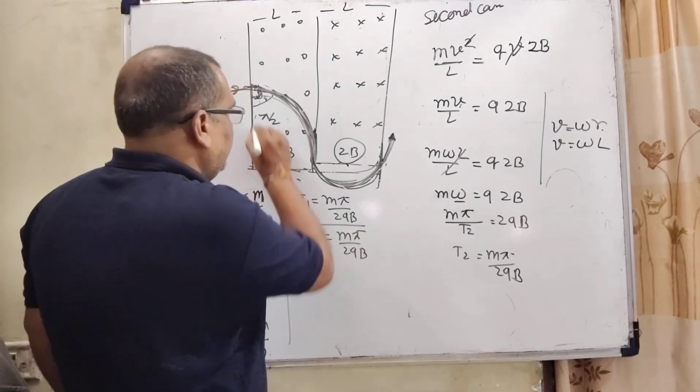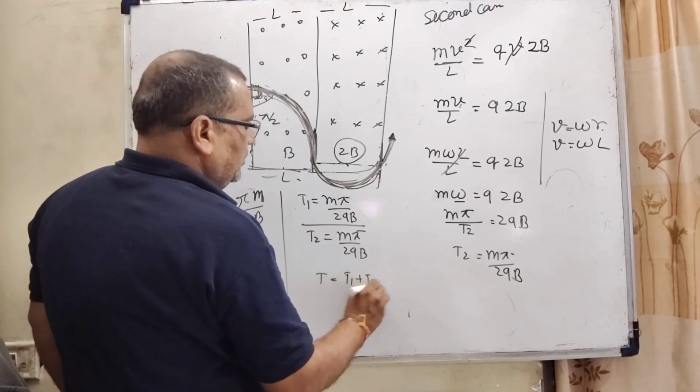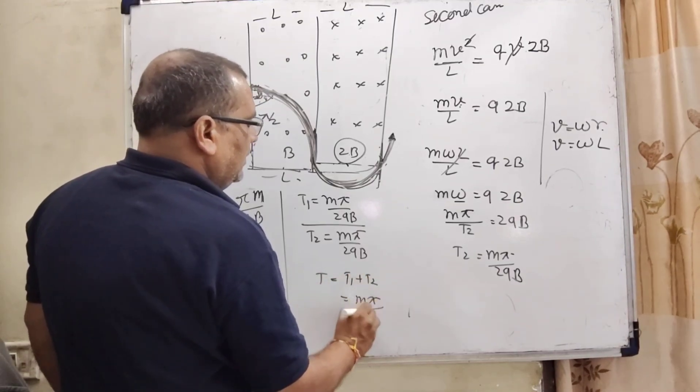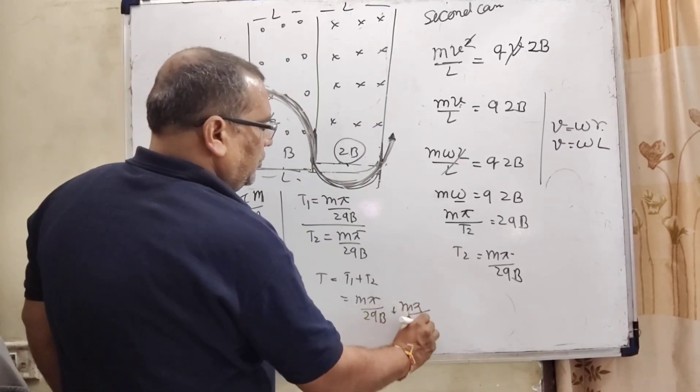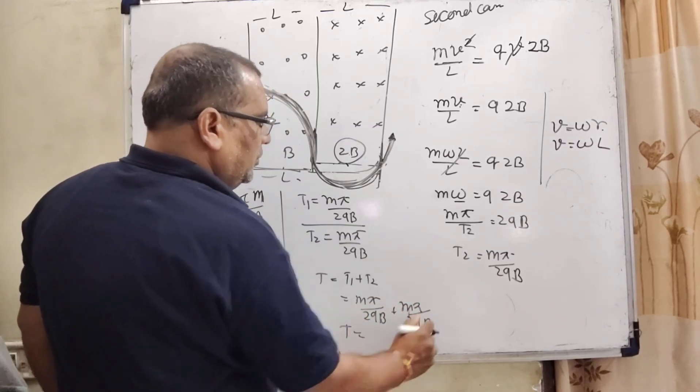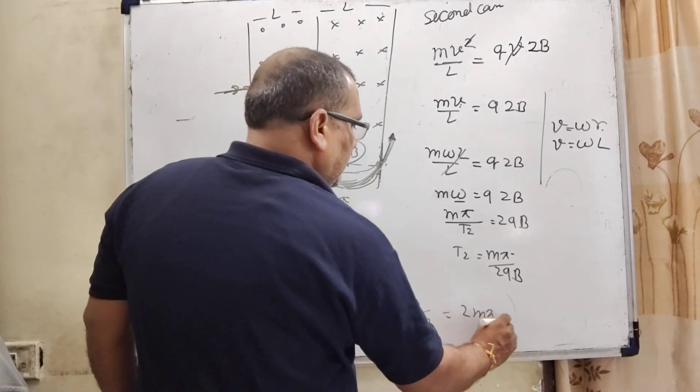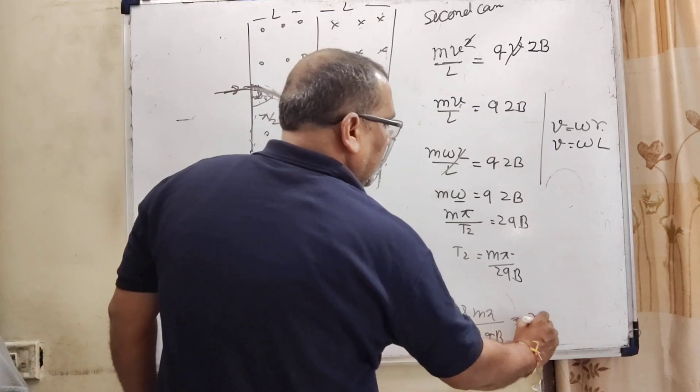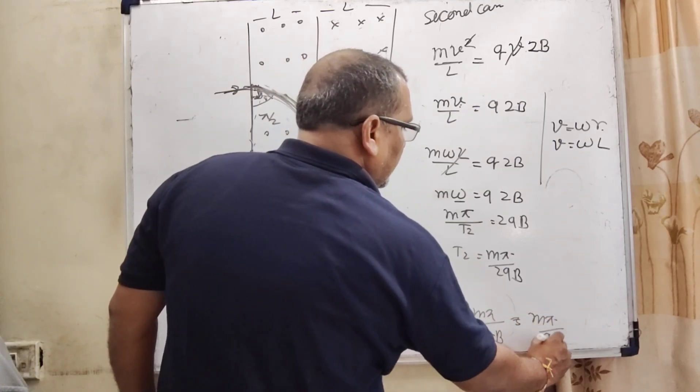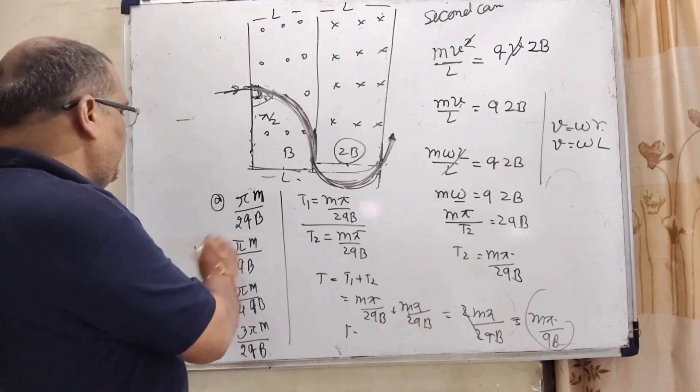Now, total time spent by this charge, t1 plus t2, m pi by 2 qv plus m pi by 2 qv, then t equal to 2m pi by 2 qv. 2 will cancel out, then m pi by qv is the correct answer. So here, option B is correct. I hope you understood this question.